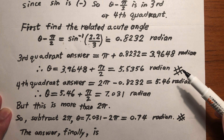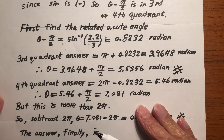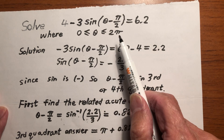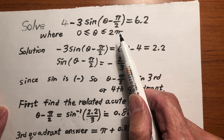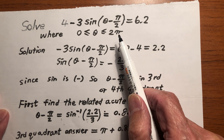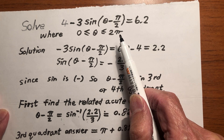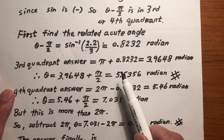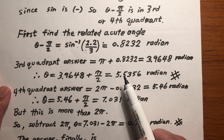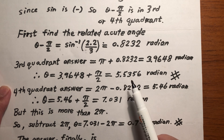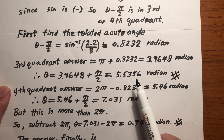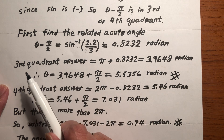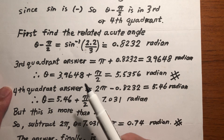Why am I sure this is the answer? Because the theta interval is given — theta is between 0 and 2π. Two pi is approximately 6 point something, and 5.5 is less than 6 point something. So this answer is between 0 and 2π. This is my answer from the third quadrant.